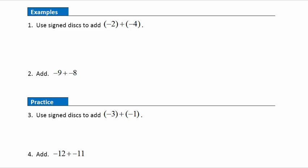Let's look at an example using signed disks to add integers with the same signs. Starting with two negatives plus four negatives — since we're adding the same kinds of things, two plus four more gives us six negatives altogether. For question two, adding negative nine plus negative eight: we know the answer is negative because we're adding the same kinds of things together. Nine of these plus eight more gives us seventeen negatives.